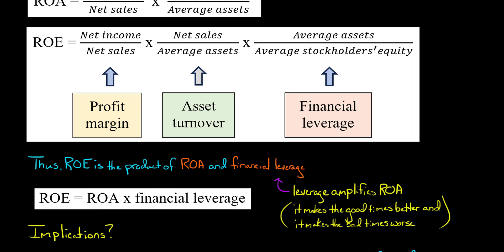A company's financial leverage amplifies its ROA, and it can actually go the other way too. If the company is losing money and has a negative ROA, then higher leverage is going to lead to an even more negative ROE. Leverage amplifies ROA — so you could have two companies with similar return on assets, but the one with higher leverage will have higher return on equity.